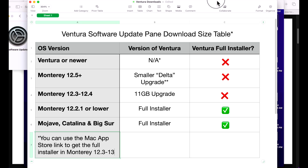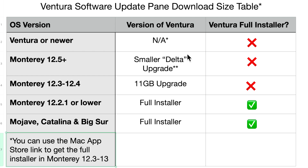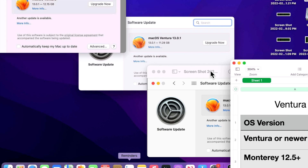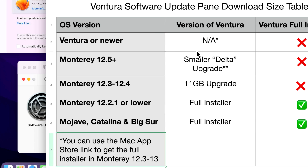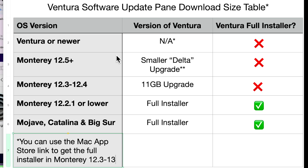I made a chart here that you can pause the video on. It shows that if you're on Mojave, Catalina, or Big Sur, Software Update will give you the full installer. If you're on macOS Monterey 12.2.1 or lower, you'll also get the full installer in System Preferences. 12.3 or newer is where it switches to the new upgrade process — you'll get the 11-gigabyte upgrade from 12.3 to 12.4, and 12.5 or newer will get that smaller update of only 3.92 gigabytes. This new upgrade process is really great, and if you're on macOS Ventura or newer, you'll get the same new upgrade process when a new version of macOS comes out. To get the full installer for all those versions, you can use the App Store link.